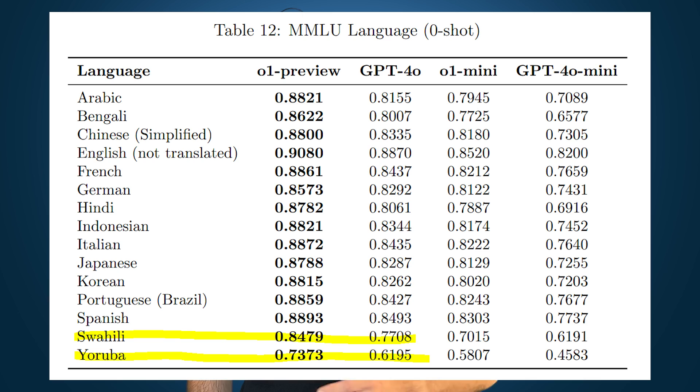It also does a great job handling multilingual tasks. In fact, in tests involving languages like Yoruba and Swahili, which are notoriously difficult for earlier models, O1 managed to outperform GPT-4O across the board.